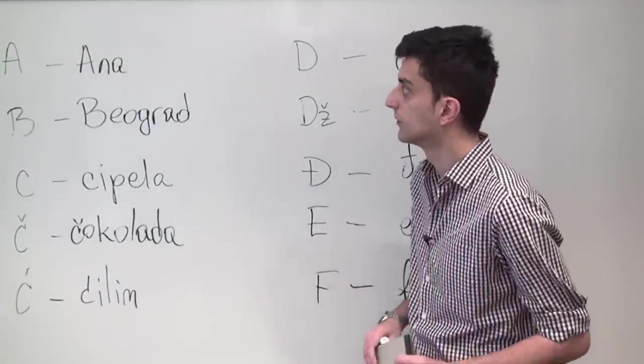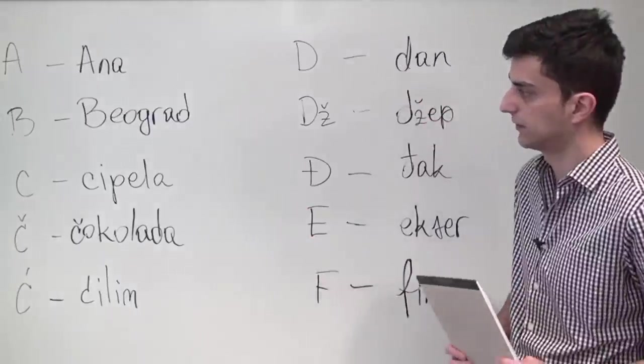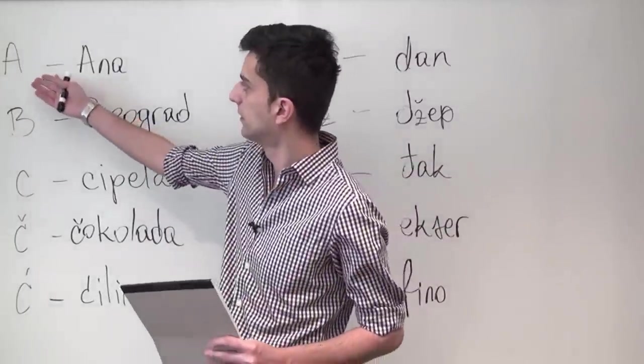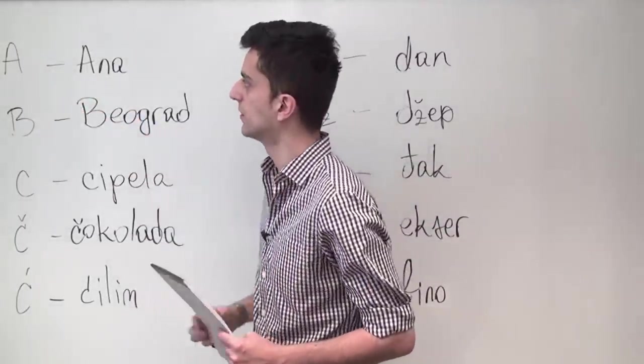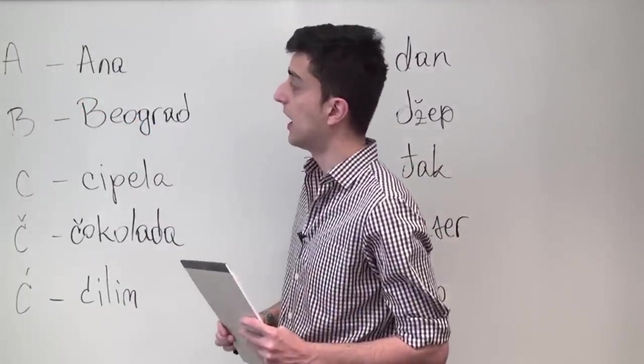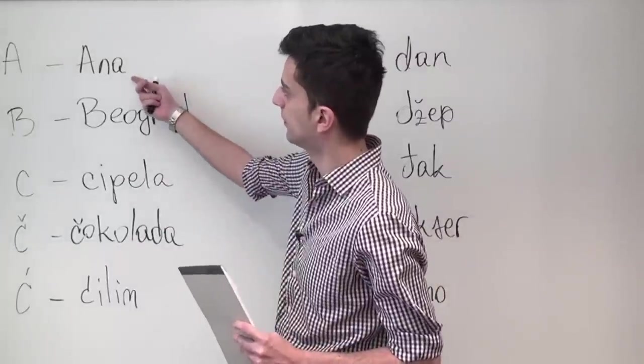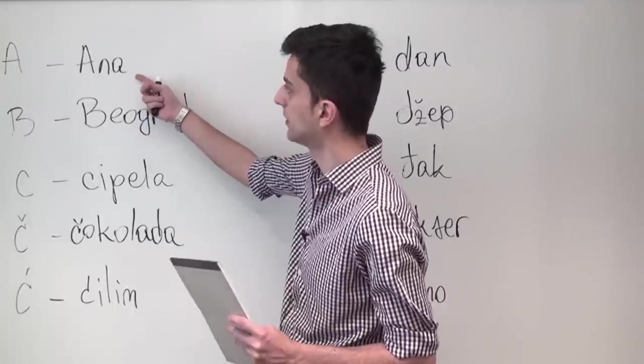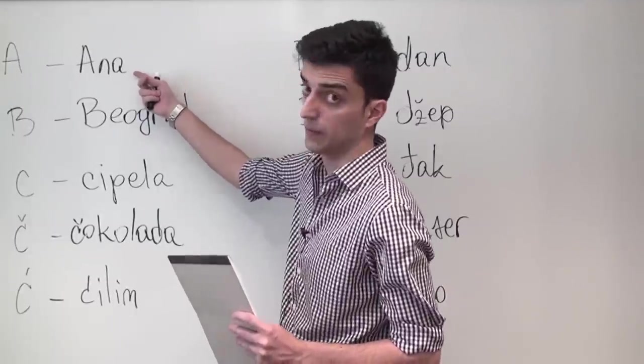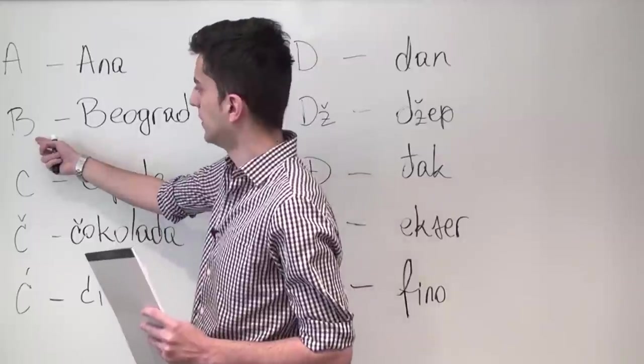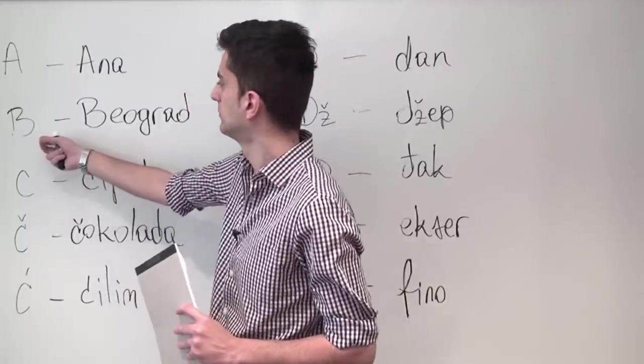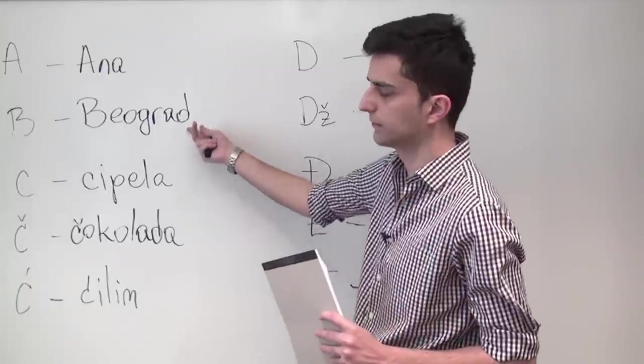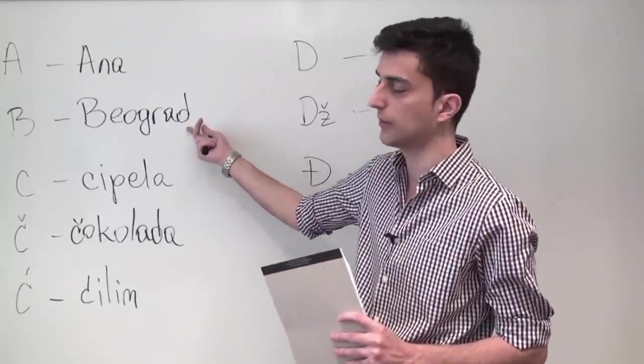So here we have the first 10 letters of the BCS alphabet. Let's start from the top. The first letter is the letter A, or as it is pronounced in BCS, A. A good example of a word with that letter and that sound is the common name Ana. Letter B is pronounced B and you can hear it in the word Beograd, which is the name of the capital of Serbia.